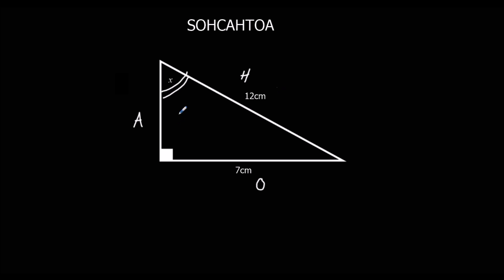So, in this question, we're not using A, because we've got H with 12, O with 7, A's by himself. So, we're not using A, so we're using SOH. The first step is the same, sine of the angle equals opposite over hypotenuse. Then we substitute in, which leaves us with sine, the angle's x, so we'll write sine x equals opposite over hypotenuse, 7 over 12.